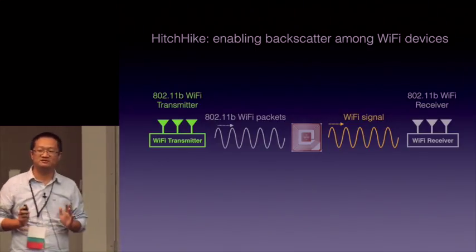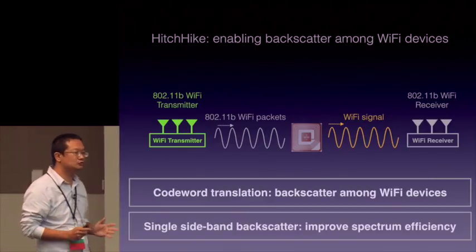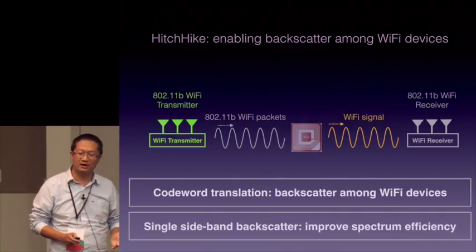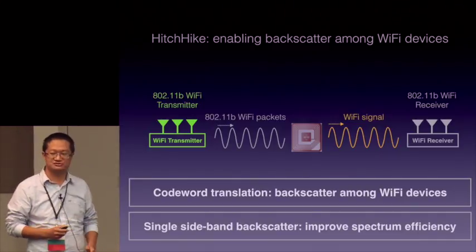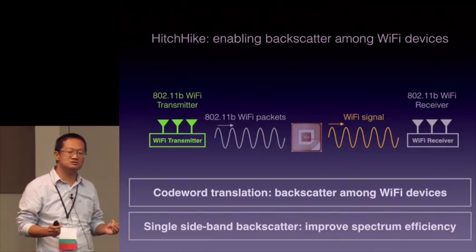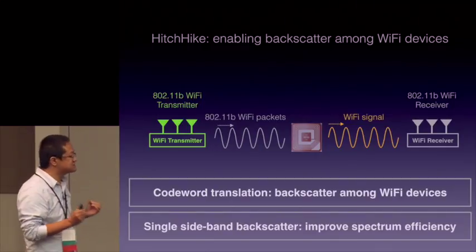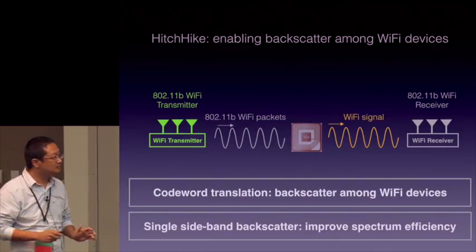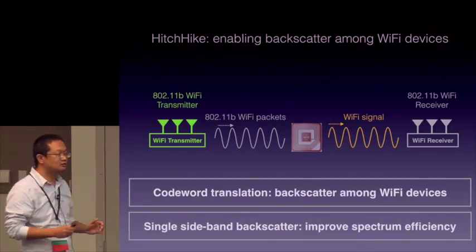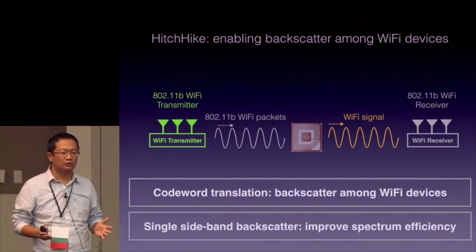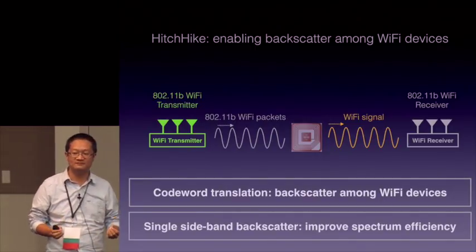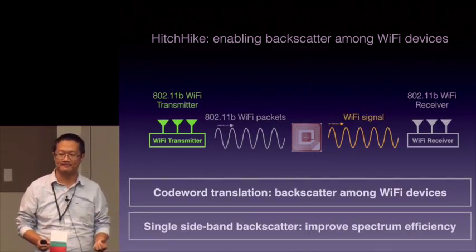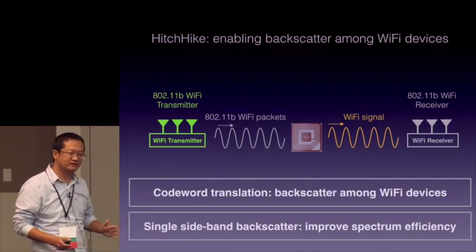In order to build this system, we make two technical contributions. The first one is codeword translation, which enables backscatter communication between Wi-Fi radios. The second one is single sideband backscatter, which significantly improves the backscatter spectrum efficiency. We will discuss each of them.